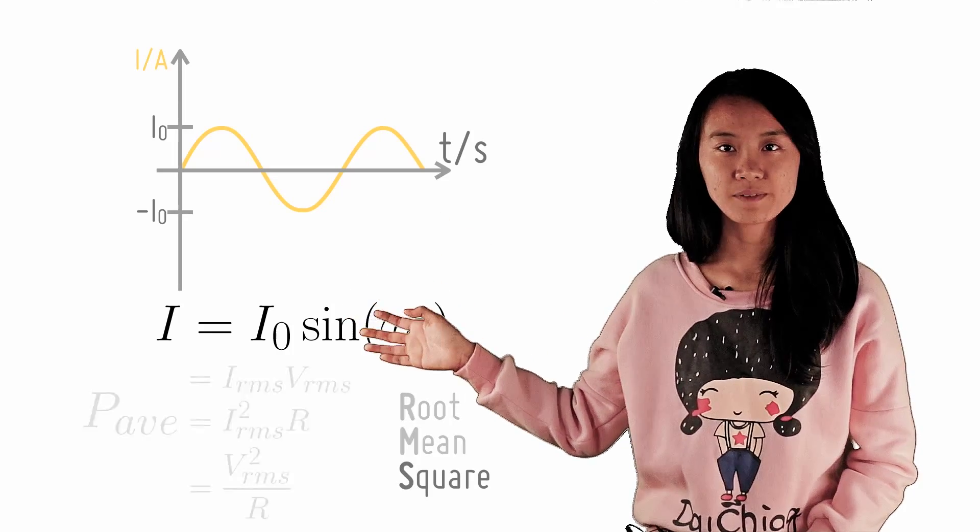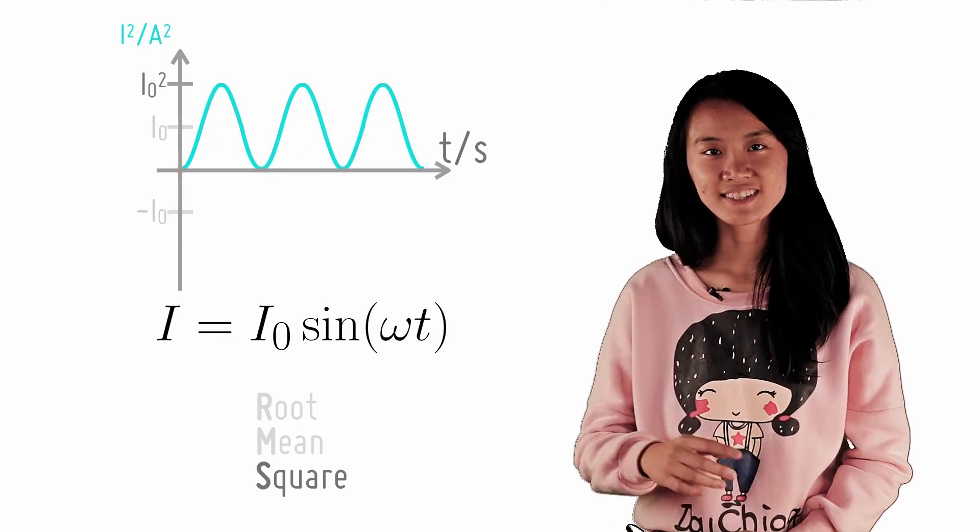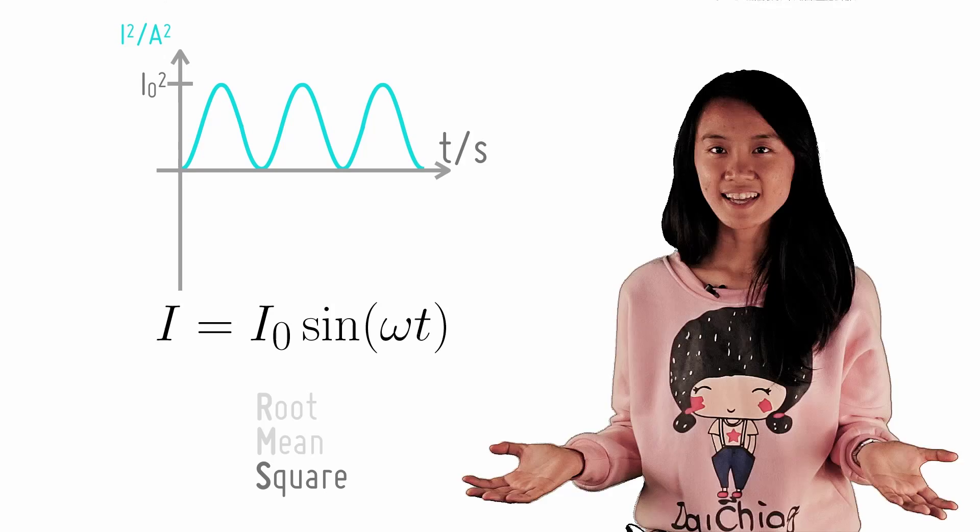First, we square the current value at every point in time. Graphically, you will get a new waveform that looks suspiciously sinusoidal. Why is this the case?